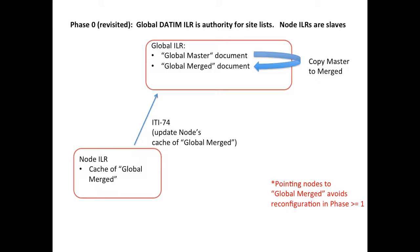Revisiting phase zero, what we can do to keep the configuration consistent across all phases for the nodes is take the global master document and simply copy it into the global merge document. Essentially it's the same merge process as phase one, except the number of operating units managing their own nodes is the empty set. As long as we have the node ILR pointing to the global merge document rather than the global master document, we can preserve the same configuration options at the node level through all phases.